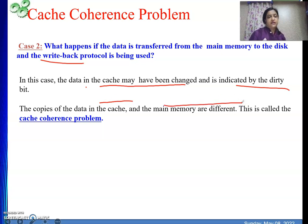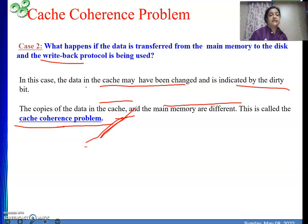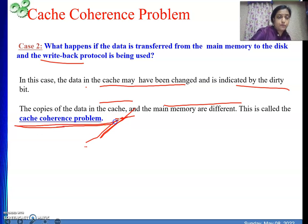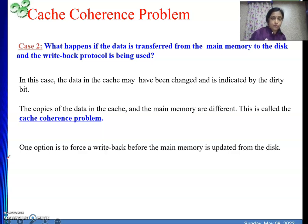In this case, the data in cache may have been changed — as shown in the example from 100 to 120 — indicated by the dirty bit because we are using write-back protocol. The copies in cache and main memory are different. Whenever data exists in two places with different values, this is the cache coherence problem. Many protocols exist to solve this, and it is also an active research topic — especially in multiprocessor systems where each processor has its own cache sharing one main memory.